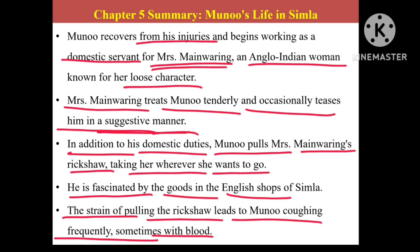The strain of pulling the rickshaw leads to Munnu coughing frequently, sometimes with blood. Munnu was maltreated since childhood. Since his 14 years he started working without good nutrition, and his mental and physical health were not up to the mark. From all aspects he was deteriorated, and when given this laborious task again his body was not able to tolerate it. Therefore he started emitting blood from his mouth — this was the sign of tuberculosis.